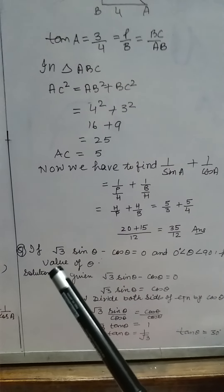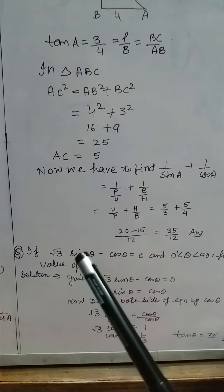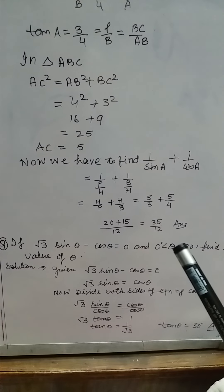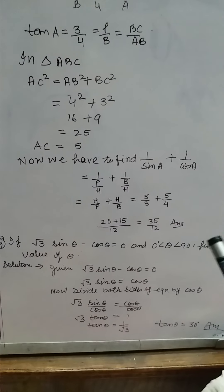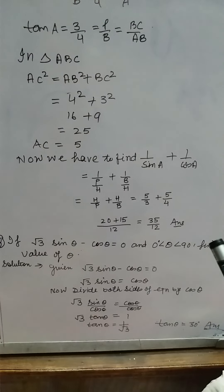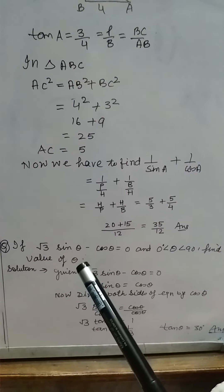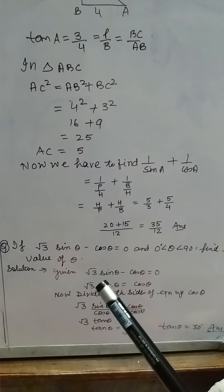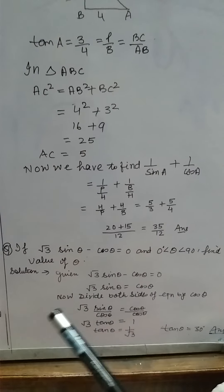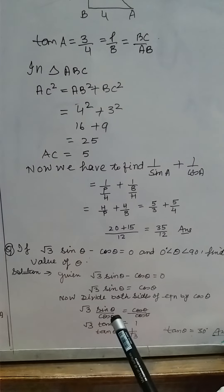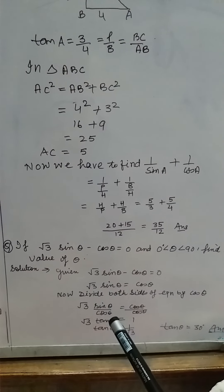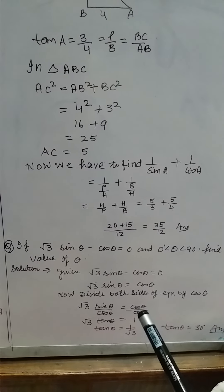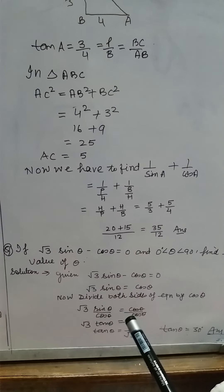In question number 26, it is given that root 3 sin theta minus cos theta is equal to 0. We have to find the value of theta. Rearranging: root 3 sin theta equals cos theta. Now divide the entire equation by cos theta on both sides. Sin theta divided by cos theta gives tan theta, and cos theta divided by cos theta cancels to give 1.